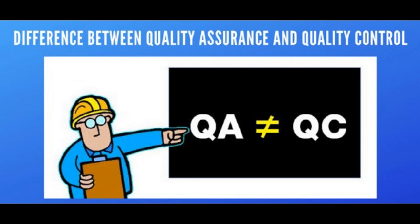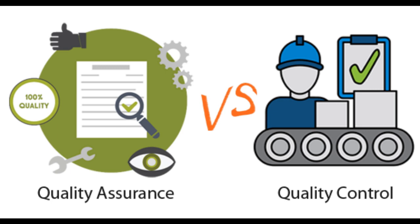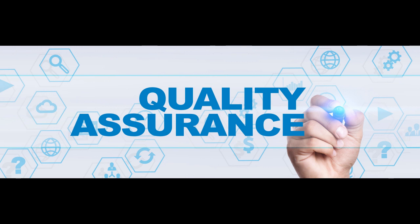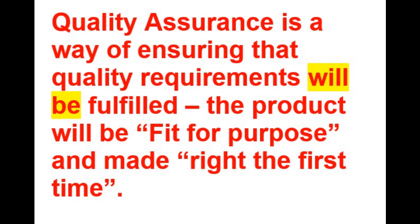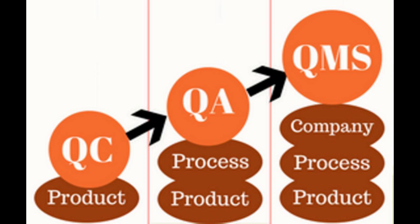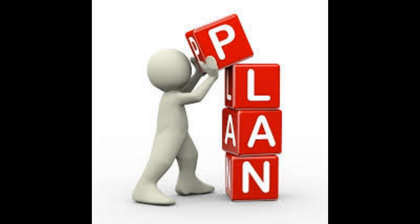Let's forget quality management for a moment and understand quality control and quality assurance first. According to ISO 9000, quality assurance is a way of ensuring that quality requirements will be fulfilled — the product will be fit for purpose and made right the first time. Here you can see in the definition of quality assurance the term 'will be' is used.